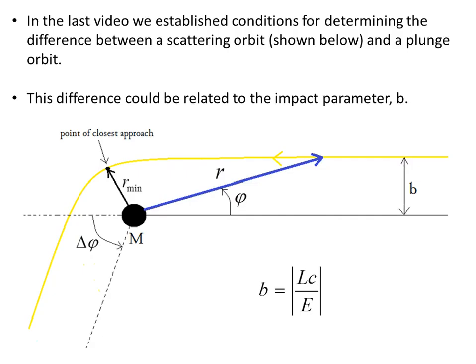In the last video we established conditions for determining the difference between a scattering orbit, shown below here, and a plunge orbit, and a couple of other cases too.